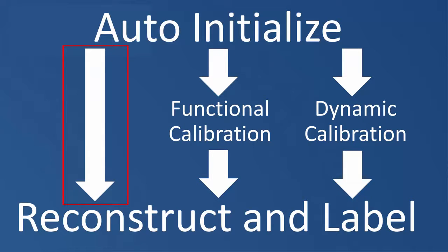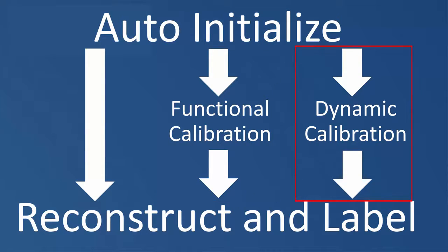The remainder of this video will be split up into three sections. The first workflow is where we will be using the static calibration, which we have just completed, to auto label a trial with a small range of motion. In the second workflow, we will be performing a functional range of motion calibration, and then using the functional calibration to auto label a dynamic trial with a larger range of motion. And in the third workflow, we will be using a dynamic trial as our functional calibration.